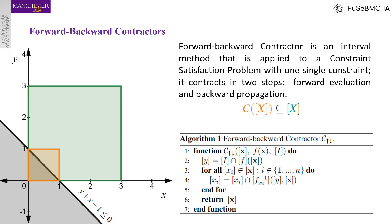First, I would like to show what a forward-backward contractor is. A forward-backward contractor is an interval method that is applied to a constraint satisfaction problem with one single constraint. It contracts in two steps: forward evaluation and backward propagation. Illustrated in the algorithm below, on line 2 we have the forward evaluation, and on line 4 is the backward propagation step for each dimension. On the left, we have an example of a constraint y + x - 1 ≤ 0, with an initial domain in green and the result after applying the contractor in orange. The result of the contractor is always a subset or equal to the initial domain.